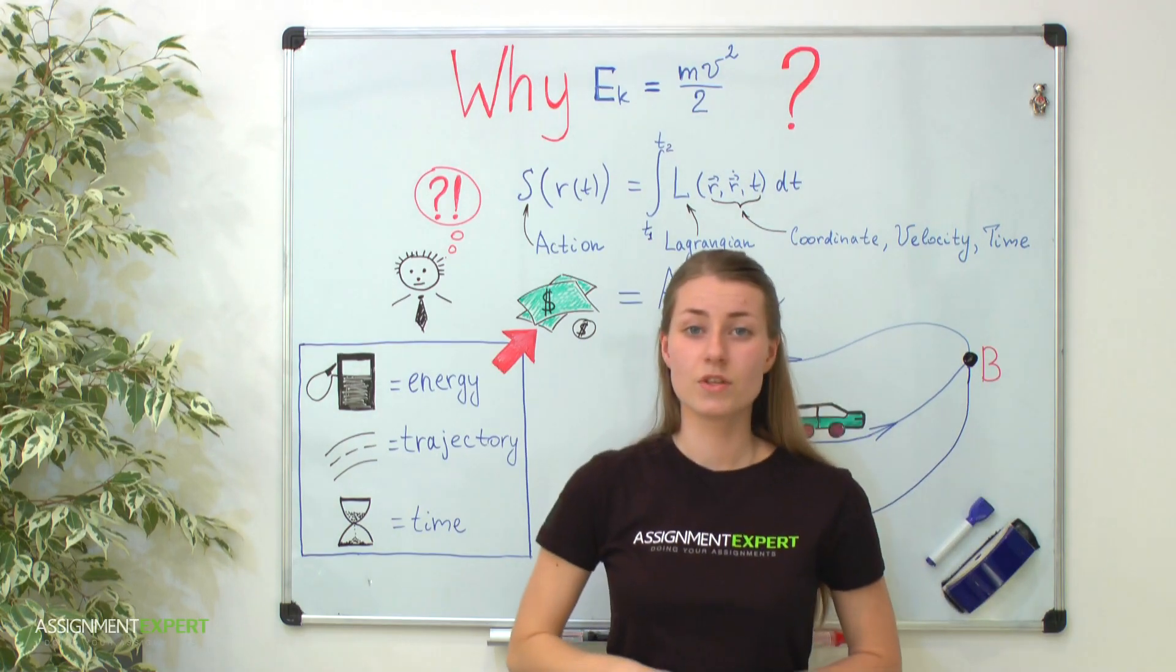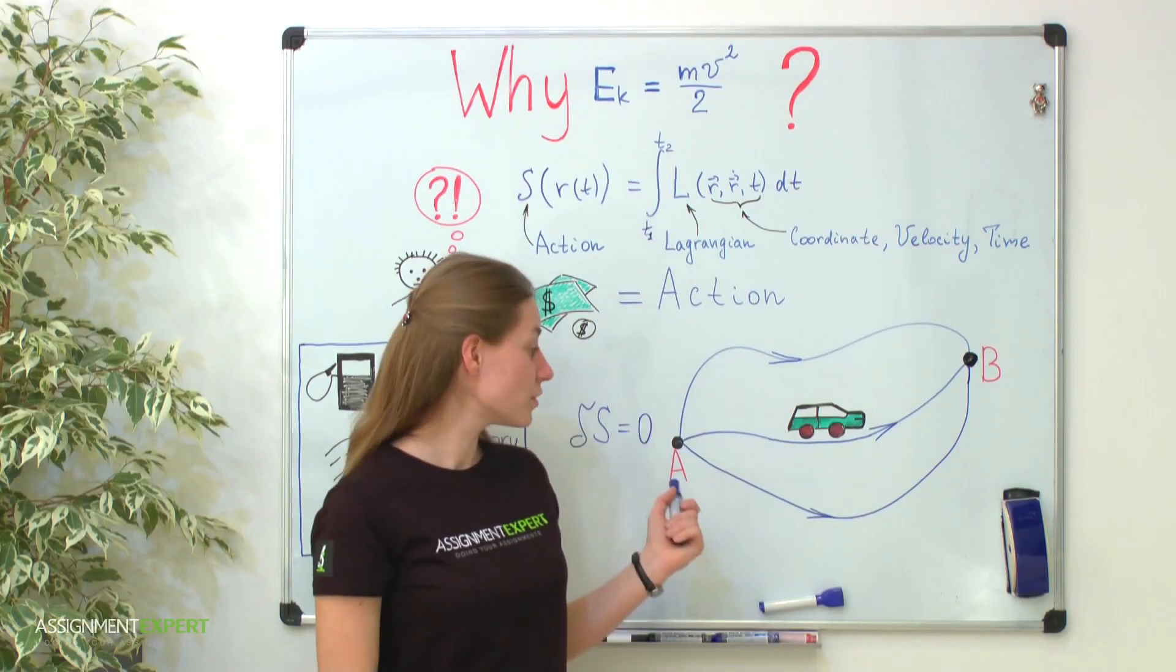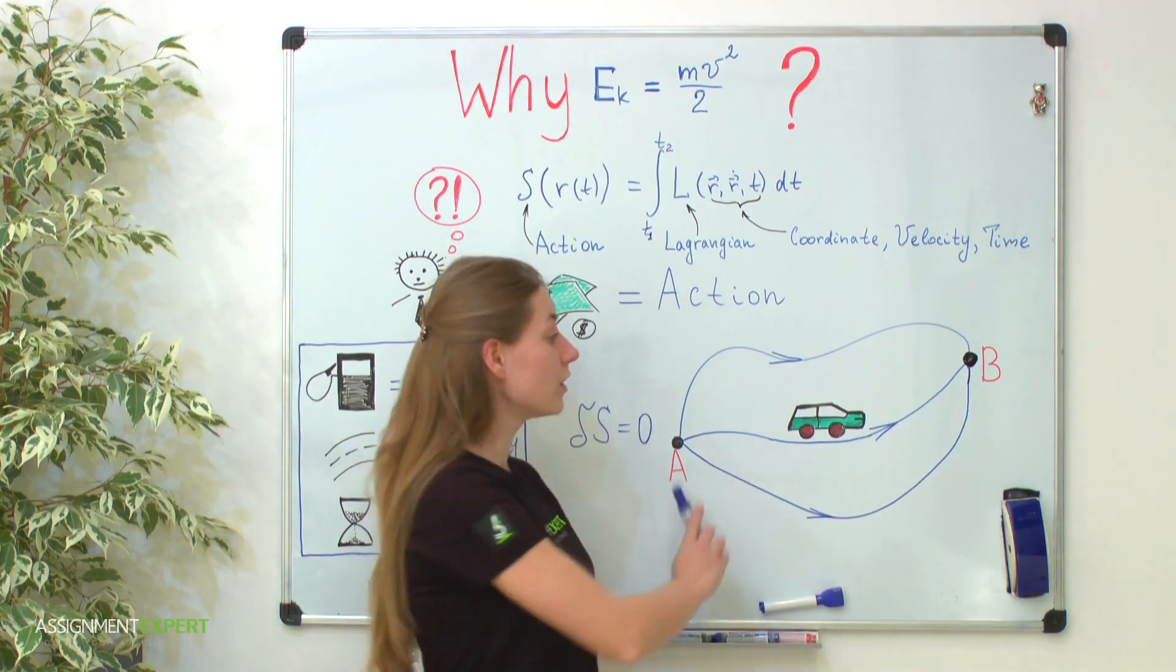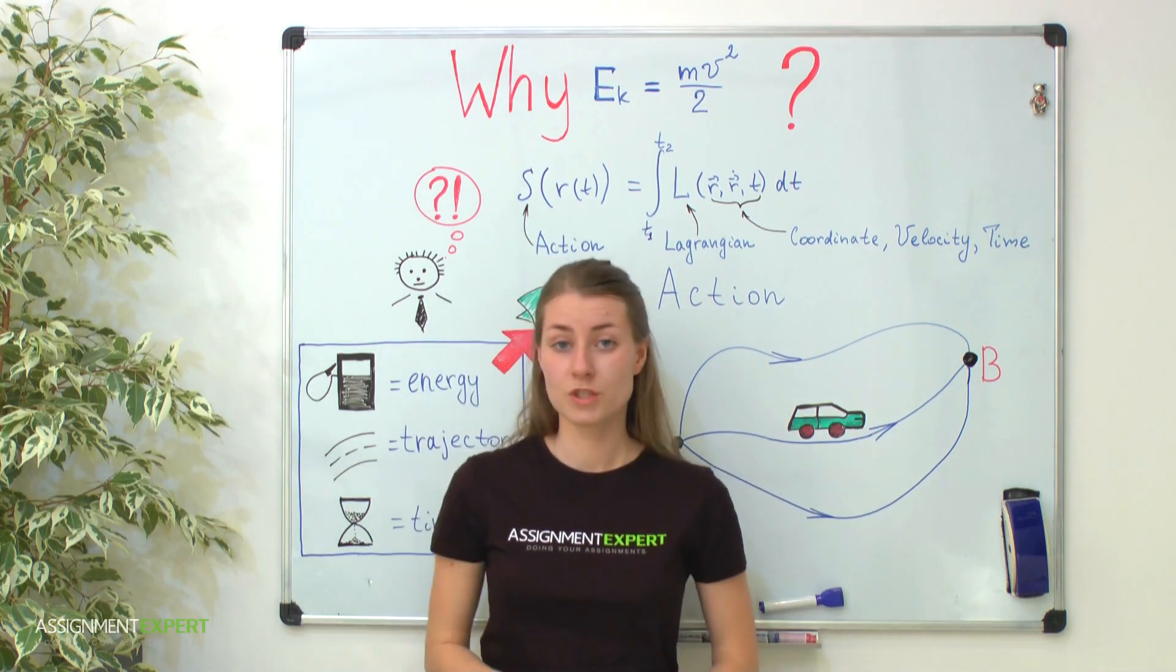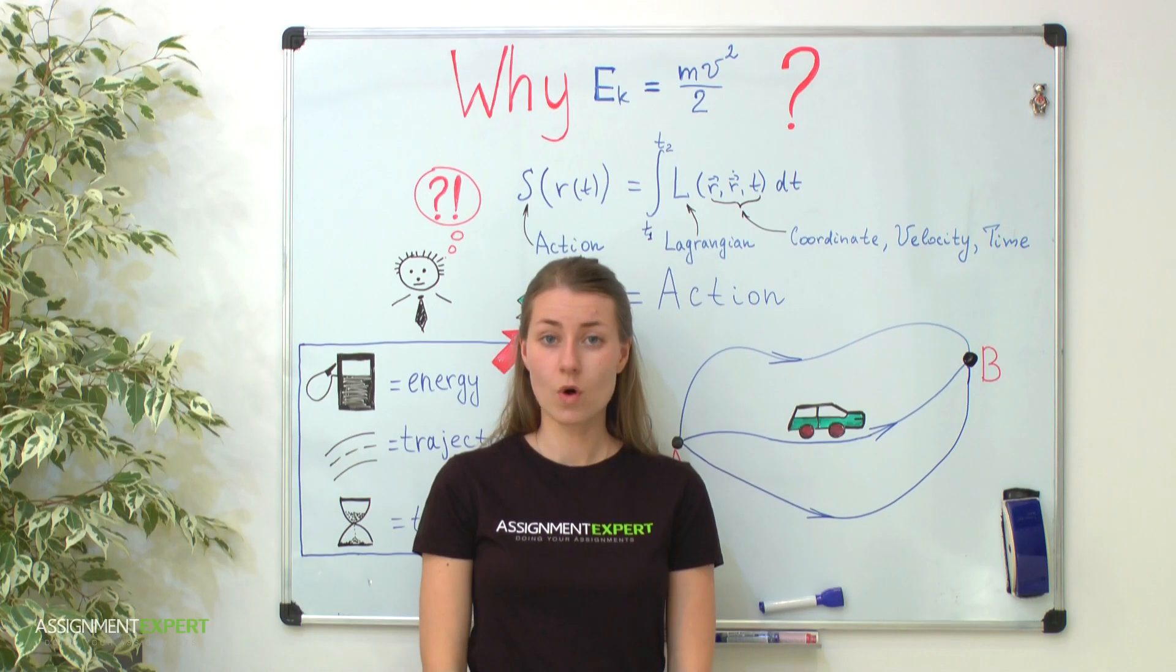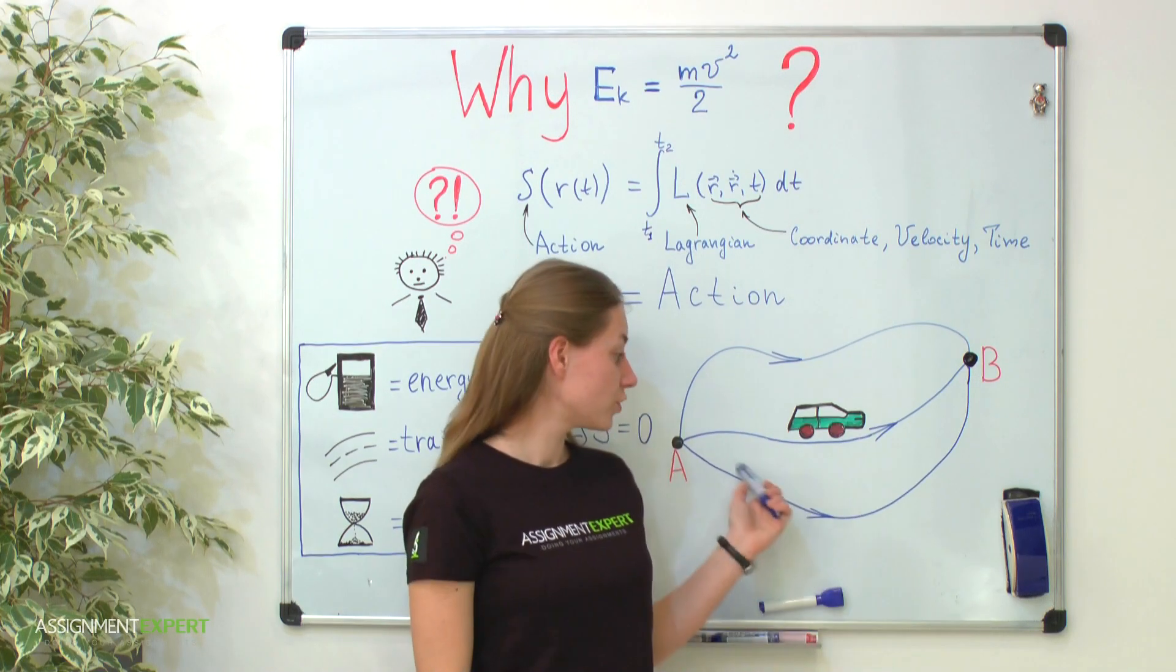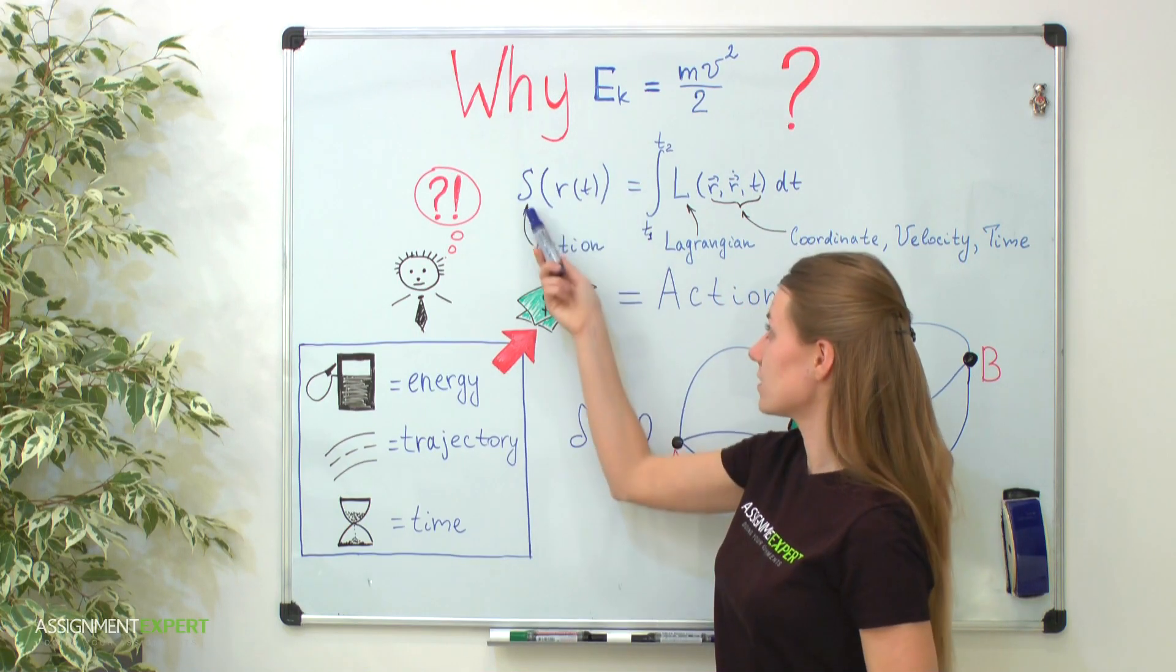In general, action appears in physics as measure of the system's movement, because minimization of it gives us equations of motion. Let's try to understand it on a simple life example. Suppose I want to get from point A to point B. In general there are a lot of ways to do it, but in fact only one, the most optimal way will be realized.